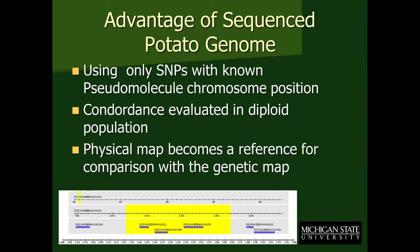Having the potato genome sequence prior to this mapping work has really helped us. By doing the diploid mapping work, we were able to see the concordance between the SNPs in the diploid population and the potato browser. So we can use the position of the SNPs on the pseudomolecules as a way of organizing our data in Tetraploid Map. Without that, we would be doing things on a random basis, which would really slow the analysis process down.